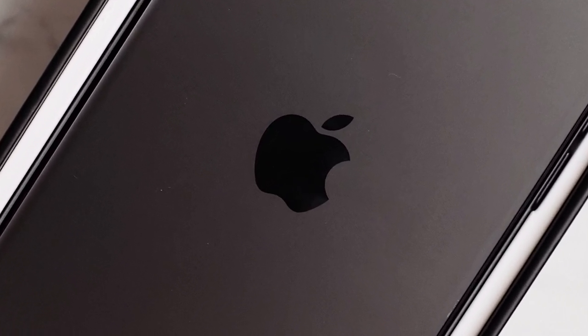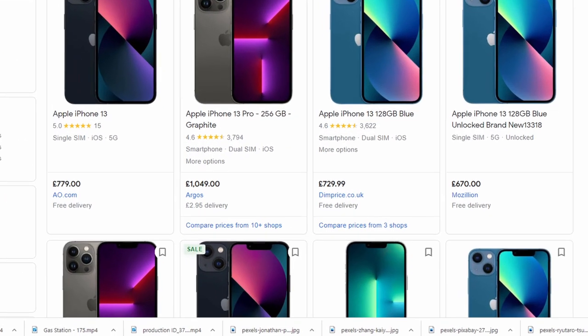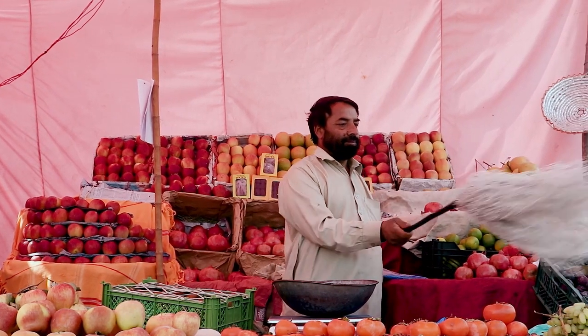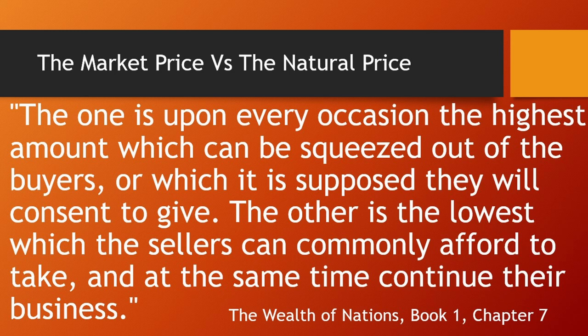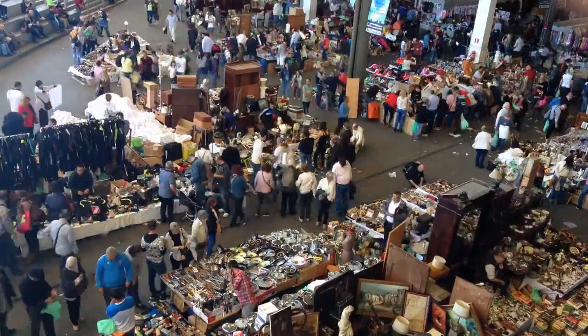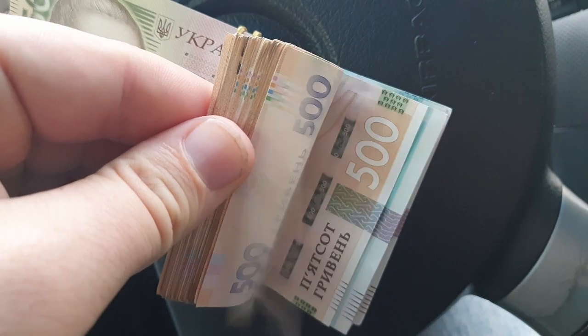The price of something controlled by a monopoly will be the most money they can get for it. Think about a new iPhone — only Apple can make them, and they charge as much as they can. The natural price, however, will be the lowest price that still allows the seller a revenue to make it worth their time selling it. The monopoly price is the highest which can be squeezed out of the buyers, or which they will consent to give. The natural price is the lowest which the sellers can commonly afford to take and at the same time continue their business. Competition is good — it gives us cheap things. Monopolies are good for the people who control them, but bad for the economy of the nation.